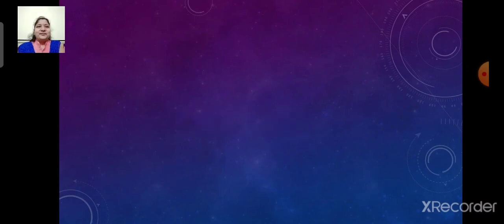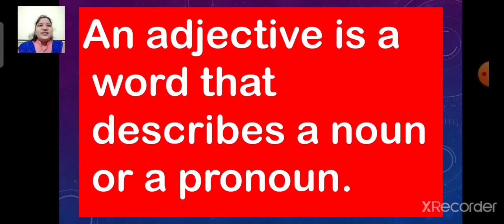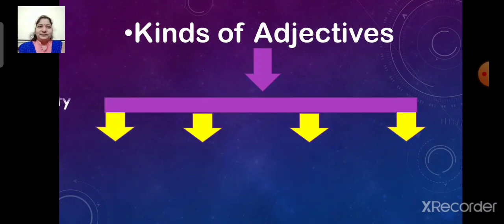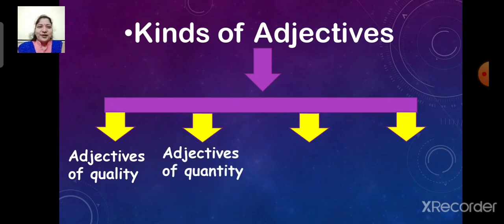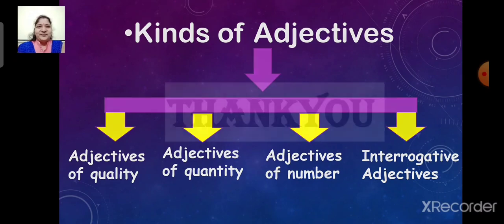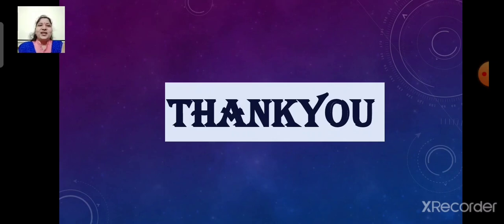Let's recap what we have learnt today. An adjective is a word that describes a noun or a pronoun. There are different kinds of adjectives: adjectives of quality, adjectives of quantity, and adjectives of number. Today we have learnt about adjectives of number. Adjectives of number answer the question: how many, or what order. Thank you very much. In the next part, we will learn about interrogative adjectives. Till then, Sairam.